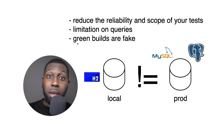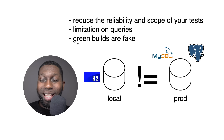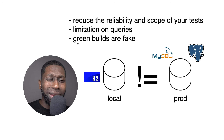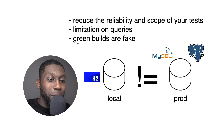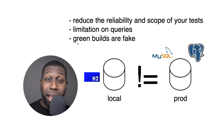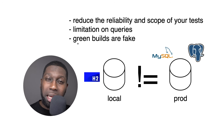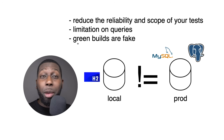Green builds are fake. You have a green build and you think it's happy days, but in reality this is even scarier than a red build — because you literally don't know whether your code works. And if you have code that goes to production and it's used by millions of people, it can be very costly.